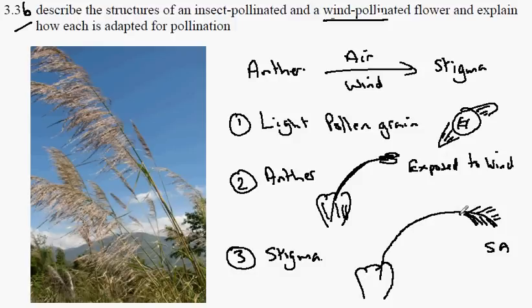A kind of feather-like structure to catch the pollen grains as they pass through the air on the wind and will be caught onto this stigma structure here.